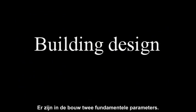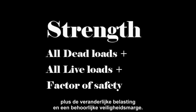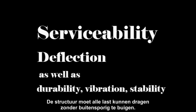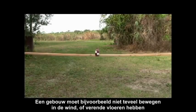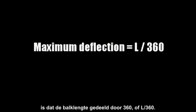There are two fundamental parameters of structural design. The first, of course, is strength — each component must be able to hold the dead load plus the live load plus a significant factor of safety. And the second is what's called serviceability: the structure must be able to support all the loads without excessive deflection. For example, the building can't sway in the wind or have bouncy floors, even though it may be perfectly strong. Building codes have an allowable deflection, and for the towers, it's the beam length divided by 360, or L over 360.